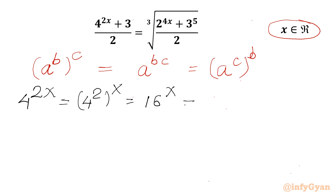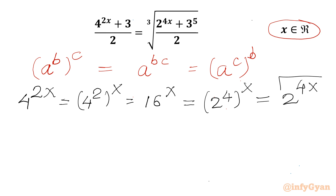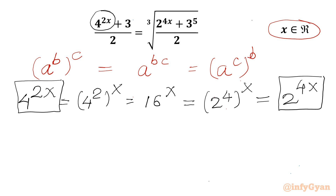16 can be written as 2 power 4, whole power x. Using the same property I can write 2 power 4x. So the conclusion is: 2 power 4x and 4 power 2x are the same. So let us replace 4 power 2x with 2 power 4x.